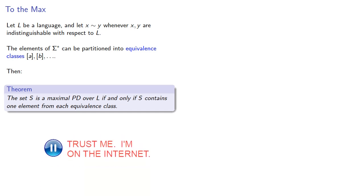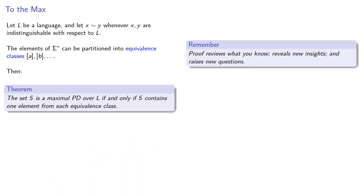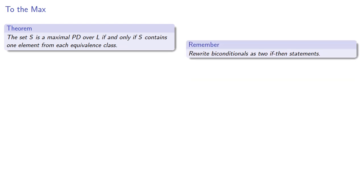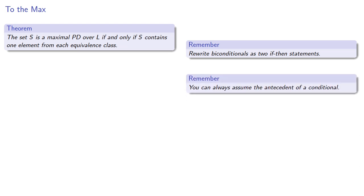So let's prove it. The purpose of proof is that it reviews what you know, reveals new insights, and raises new questions. This is a biconditional — an if and only if statement — and it's useful when proving to rewrite biconditionals as two if-then statements, because you can always assume the antecedent of a conditional.